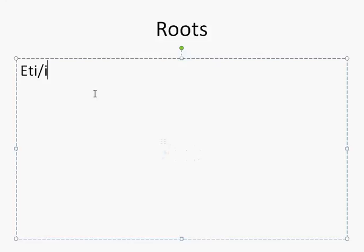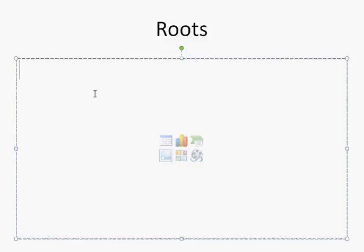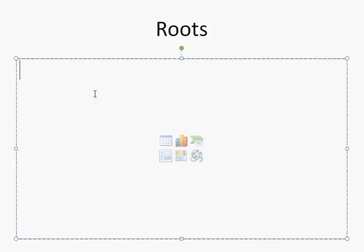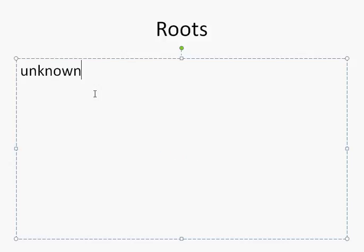Eti — you're going to see this in etiology, meaning the study of the causes of disease. So eti means cause. We're also talking about idiopathic diseases — these are diseases with unknown cause. So idio means cause in a specifically unknown or peculiar sense — unknown.